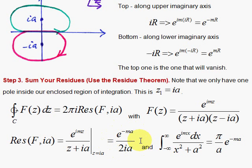And then we need to slap on the 2 pi i. And when we slap on the 2 pi i, the 2 cancels, the i cancels, we get this neat result, pi over a times e to the minus ma.